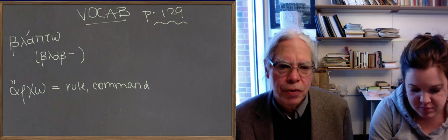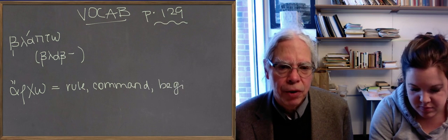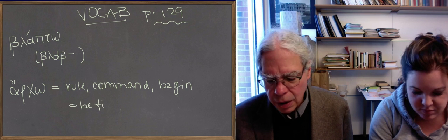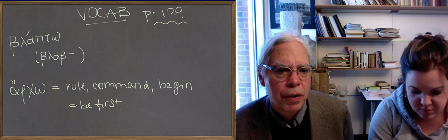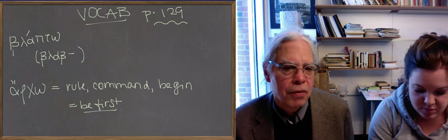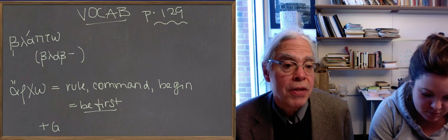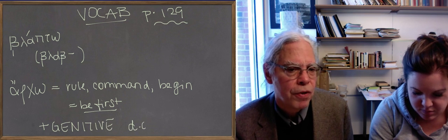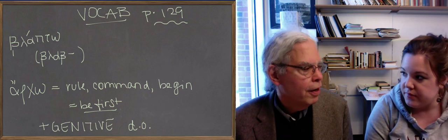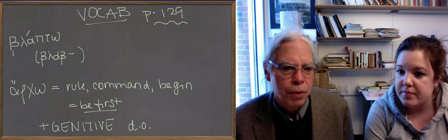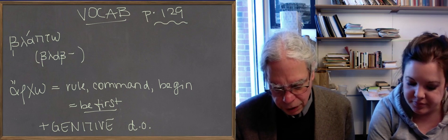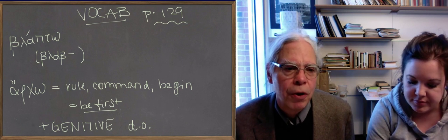So the person who's first is in charge and rules, but also is the person who begins. The most important thing about it is that it governs a direct object in the genitive case because it did mean be first. So it meant be first of a group, and then that explains why you begin with a genitive object. So it originally made sense. It doesn't anymore.